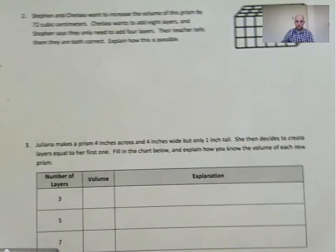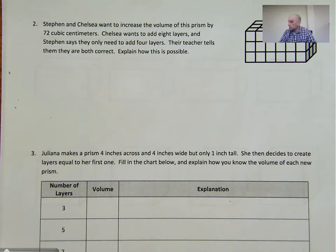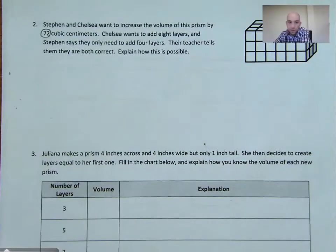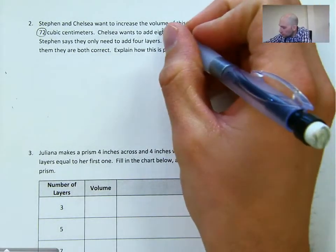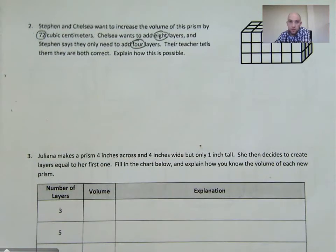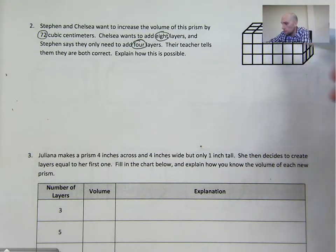Alright, let's try out a word problem here. It says: Stephen and Chelsea want to increase the volume of this prism by 72 cubic centimeters. Chelsea wants to add 8 layers, and Stephen says they only need to add 4 layers. Their teacher tells them they are both correct. Explain how this is possible. As we just did in those two examples on the front page, we know that we can split our prism into layers different ways — this way, or that way, or across the top.